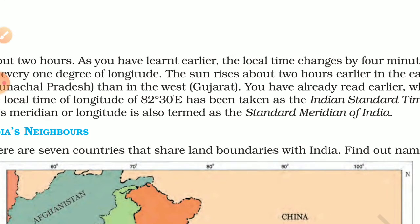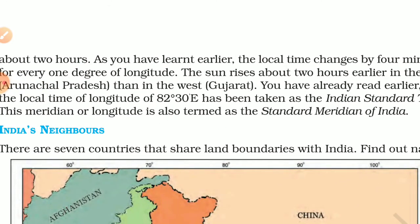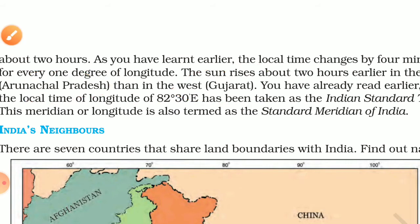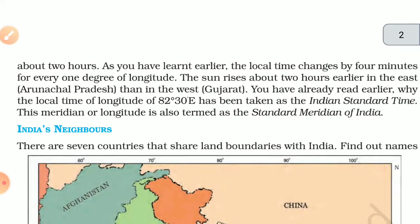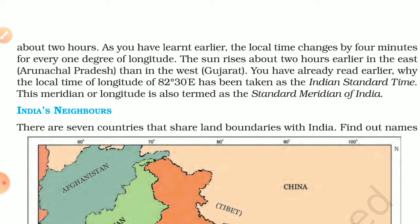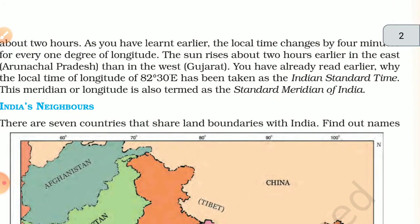Sunrise occurs about two hours earlier in Arunachal Pradesh in the east compared to Gujarat in the west. This is why the longitude of 82 degrees 30 minutes east has been taken as the Indian Standard Time (IST) meridian, to maintain a single standard time across the entire country.